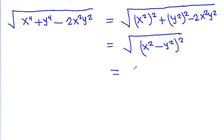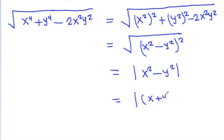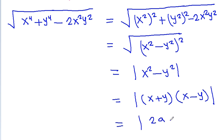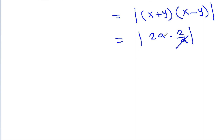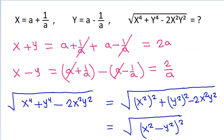So, this will be equal to mod of x square minus y square, and mod of x square minus y square will be x plus y times x minus y. We have x plus y is 2a and x minus y is 2 by a, and a will get cancelled, and it is mod 4, and mod 4 is 4. So this is equal to 4.